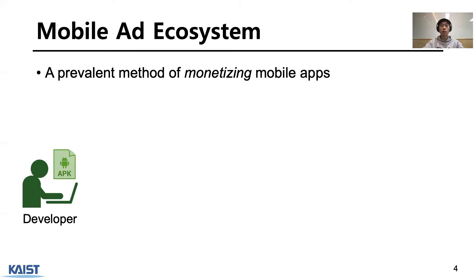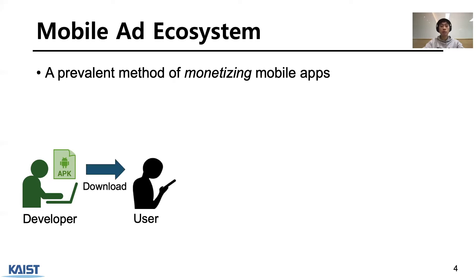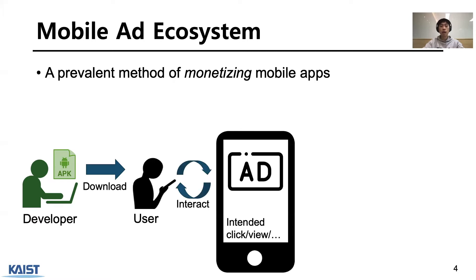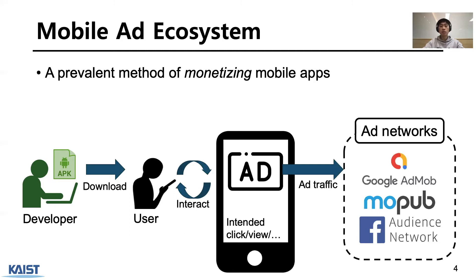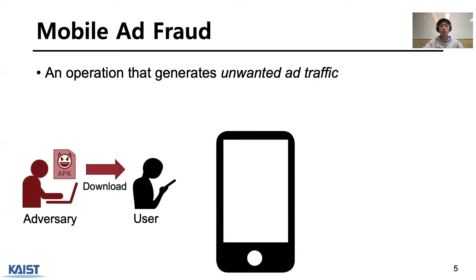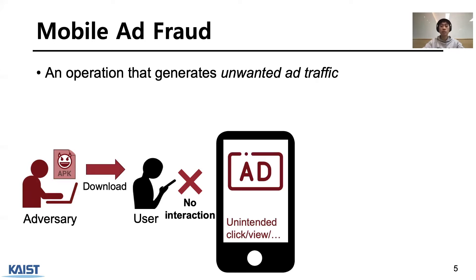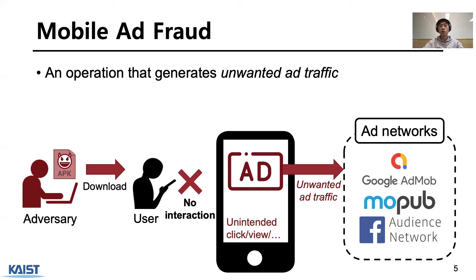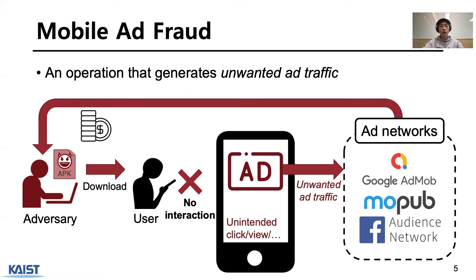Before explaining it, I'll briefly explain the mobile ad ecosystem. Mobile ads are the primary monetizing source for most apps. A developer publishes an app that displays ads; a user interacts with ads by click and impression. Each ad interaction generates ad traffic to an ad network, and the ad networks pay the developer. In this ecosystem, the adversary publishes apps containing code that performs ad fraud. Even without user interaction, the embedded fraud code can create artificial user interactions and force a victim to interact with ads, generating unwanted ad traffic. The ad network then pays the adversary due to forged click traffic.